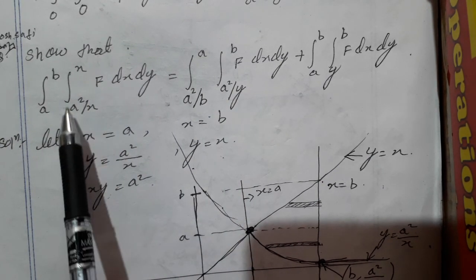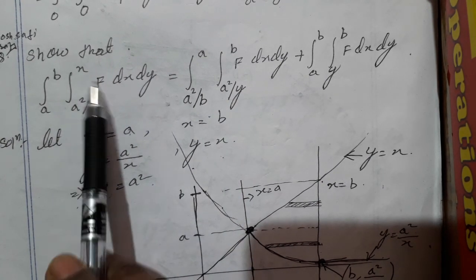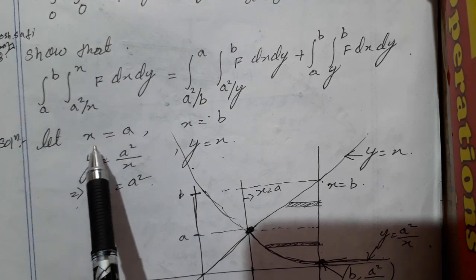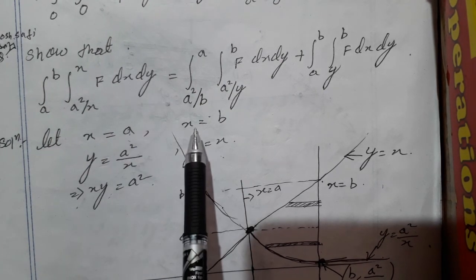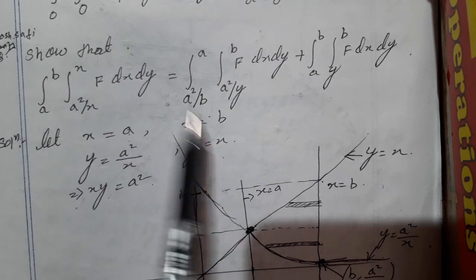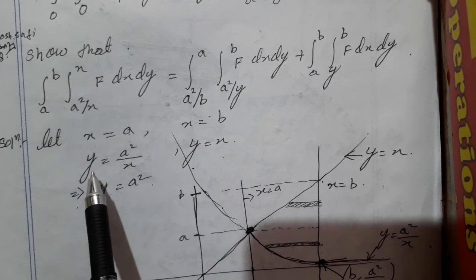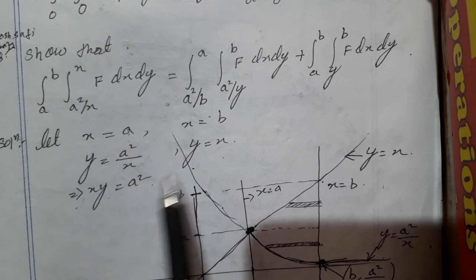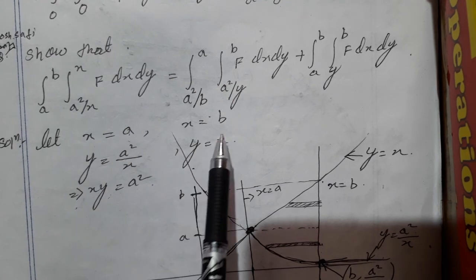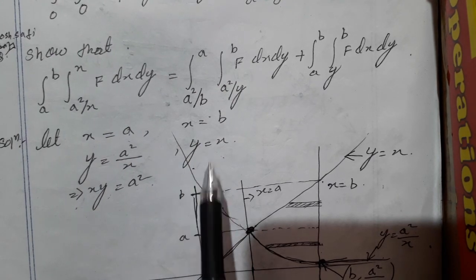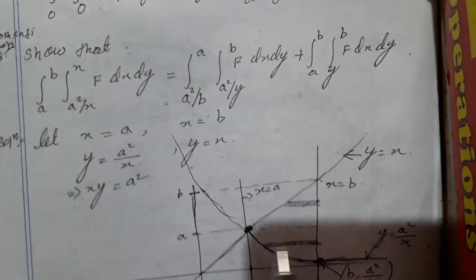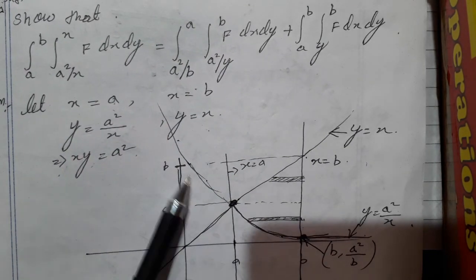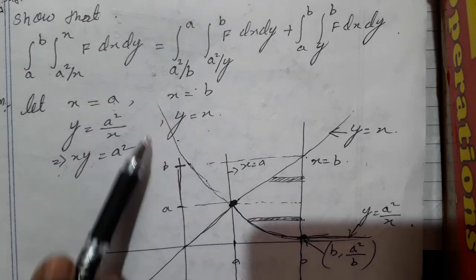This part will give you the limit for y and this is giving the limit for x. So x equal to a and x equal to b, and here we have y equal to a square by x. So we get xy equal to a square, and here we get y equal to x. So we are trying to draw this curve xy equal to a square.